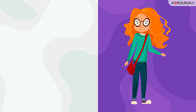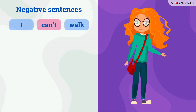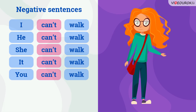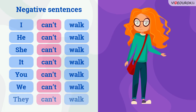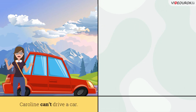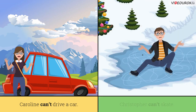To form negative sentences we say: I can't walk, he can't walk, she can't walk, it can't walk, you can't walk, we can't walk, they can't walk. For example: Caroline can't drive a car — Caroline не умеет водить машину. Christopher can't skate — Christopher не умеет кататься на коньках.